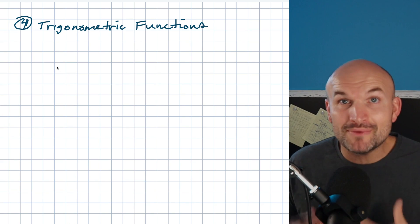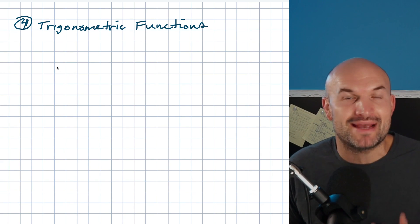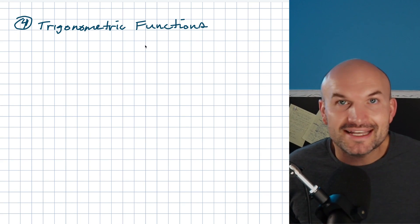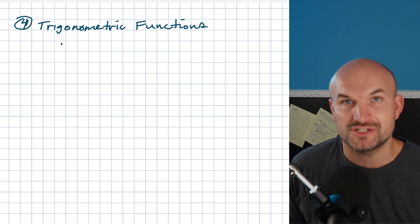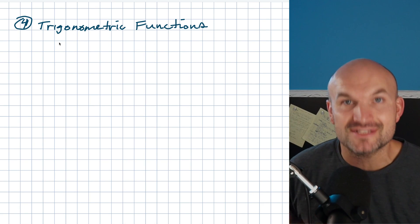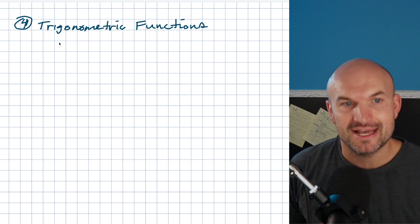The next thing that we can apply when we have a right triangle, and only when we have a right triangle, is going to be applying our trigonometric functions. That's going to be our sine, cosine, and tangent.